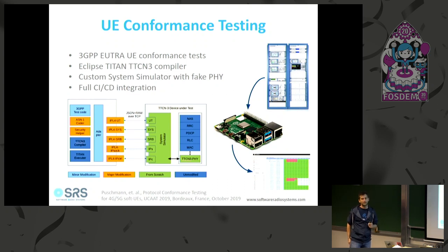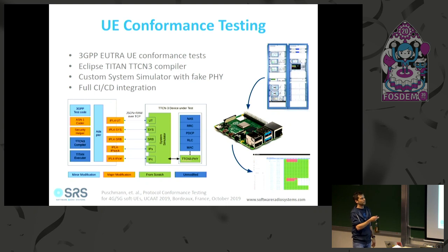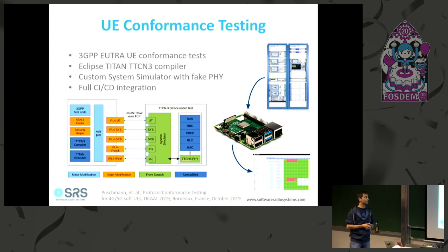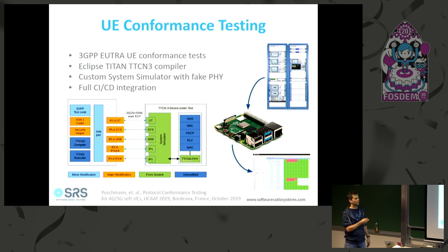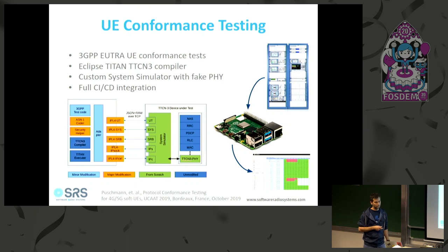Another area is conformance testing. All commercial UEs must pass 3GPP conformance tests, but test equipment like a Rohde & Schwarz setup costs around one million euros. We used Eclipse Titan — an Eclipse project with a TTCN-3 compiler, the language conformance tests are written in — to write a system simulator with a fake PHY that runs on a Raspberry Pi, fully integrated into our CI, ensuring the UE complies with all protocol conformance requirements.